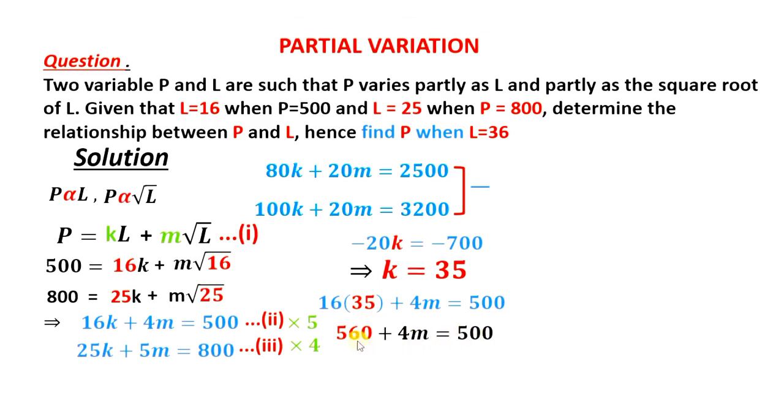Now taking 560 to the right hand side, we will have M is equal to 500 minus 560 is negative 60, and then we divide both sides by 4, so that we have M as negative 15.